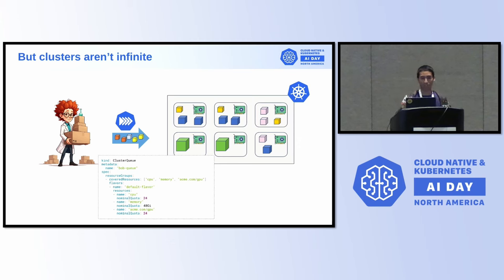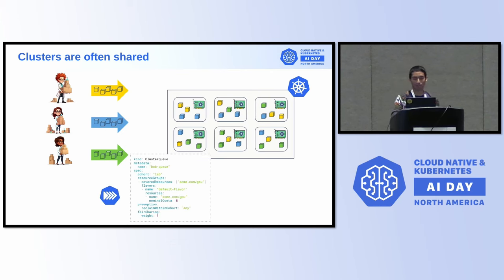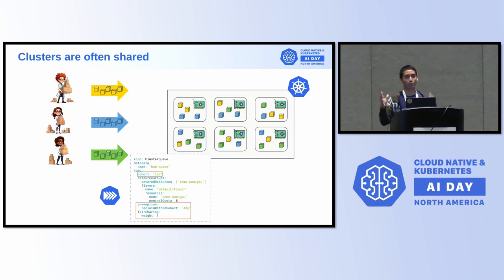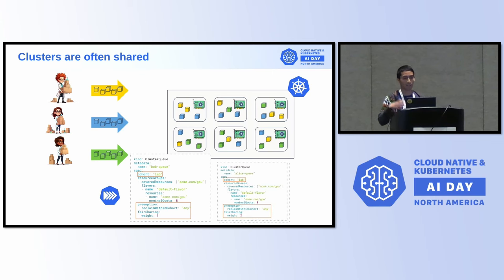Clusters are often shared. Here we have Bob, Alice, and Chelsea — they all share the cluster. This can be represented in Kueue thanks to two fields. First, a field called cohort, which tells that these cluster queues are part of a group. This group allows sharing and borrowing mechanics. And because you're borrowing, you might want to recover whatever you've lent to other users, so there are preemption policies and, more recently, fair sharing.